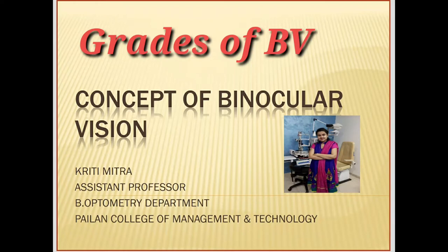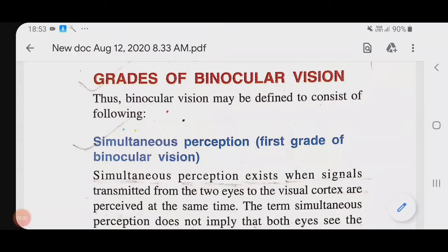Hello dear students. Today we will talk about grades of binocular vision. Let's have a look at what the grades of binocular vision are and how they are helpful for us. There are actually three grades of binocular vision. The first grade is called simultaneous perception, the second grade is fusion, and the third grade is stereopsis.